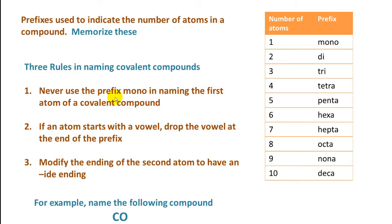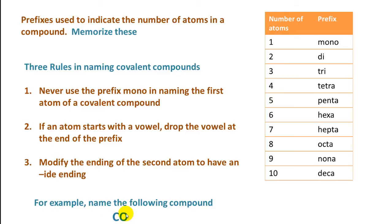There are three rules in naming covalent compounds. Number one: never use the prefix mono when naming the first atom of a covalent compound. Number two: if an atom starts with a vowel, drop the vowel at the end of the prefix. Number three: modify the ending of the second atom to have an -ide ending.